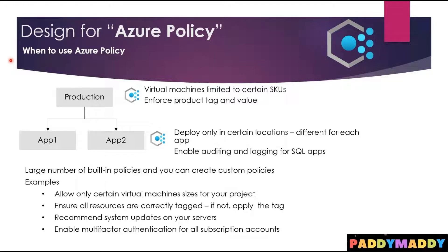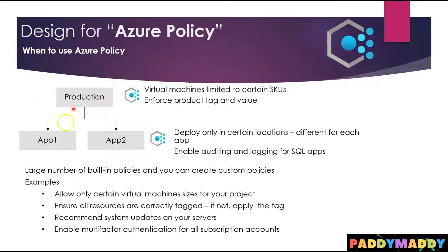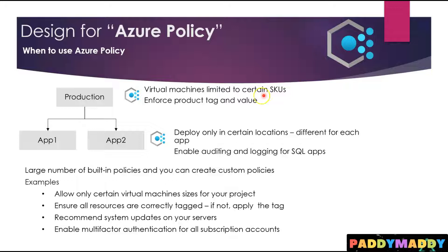For example, consider a production environment with Application One and Application Two. You could apply a policy limiting virtual machines to certain SKUs, enforcing this at the production level. App One and App Two virtual machines would follow those specific SKUs and cannot spin up any additional SKUs other than what you have defined in your Azure Policy. That's a classic example of how you can enforce rules.